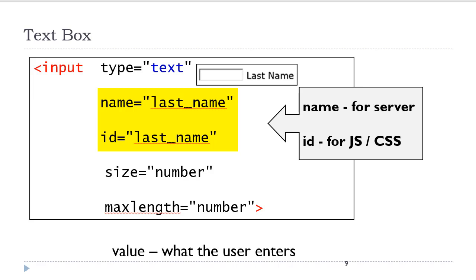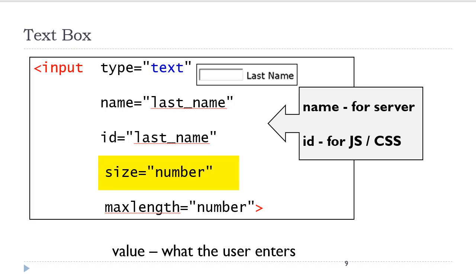You will often see the same value being used for both the name attribute and the ID attribute. The size attribute indicates how many characters will be visible in that text box. The default is approximately 15 characters, which will vary according to the browser. This attribute can be replaced with CSS. The maxLength attribute should always be set. By default, the user can type an infinite number of characters in a text box. For security purposes, you should limit the length that the user can type based on the amount of data required for that form field.